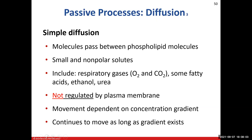Simple diffusion involves the movement of solutes that are small and non-polar. They pass right in between the phospholipid molecules in the plasma membrane. Examples include oxygen, carbon dioxide, some fatty acids, alcohol, ethanol, and urea. These things are not going to be regulated by the plasma membrane. Movement depends on the concentration gradient — whether it exists and how steep it is.